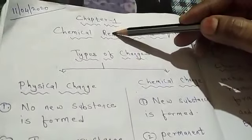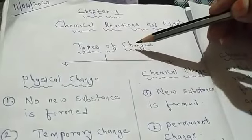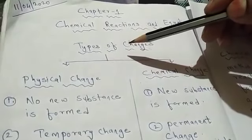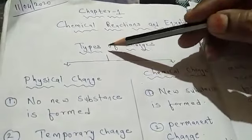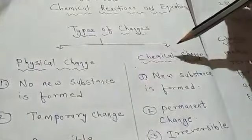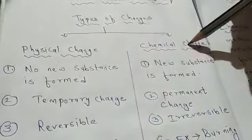Before coming to the topic, let us revise what is being learned in class 9. Types of Changes. How many types of changes are there? Two. Physical, Chemical.